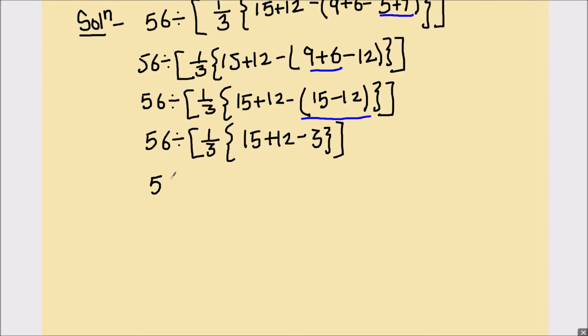In the next step, we have 56 divided by one-third, and first we'll do addition. 15 plus 12 is 27 minus 3, and the curly bracket is closed. So we have solved 15 plus 12, so we'll underline it. Next we have 56 divided by one-third, and 27 minus 3 is 24, so that's times 24.